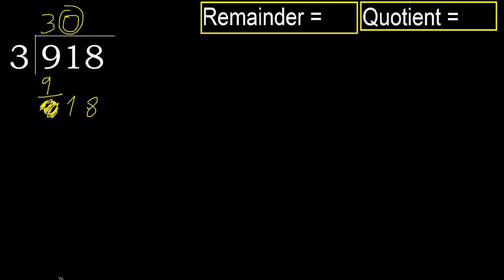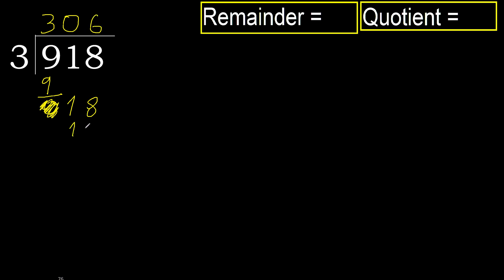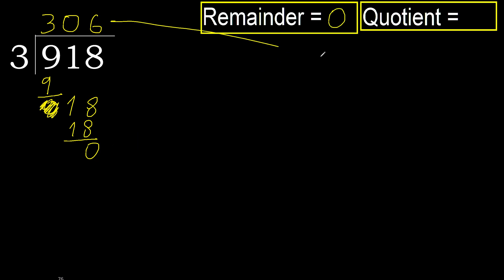Always complete with 0 when there are 2 digits. Here we have 18. 3 multiplied by 6 is 18, which is not greater. Subtract 18 minus 18 equals 0. Next, there is no remaining number, therefore finish. Therefore 918 divided by 3 equals 306.